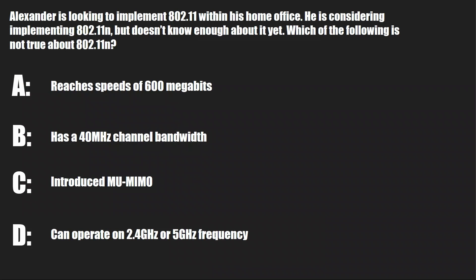A, it reaches speeds of 600 megabits. B, it has a 40 megahertz channel bandwidth. C, it introduced MU-MIMO. Or D, it can operate on a 2.4 gigahertz or 5 gigahertz frequency.